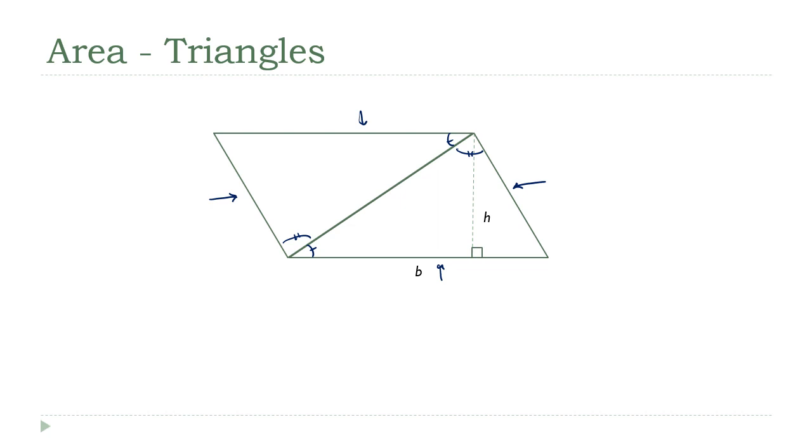We already know what the area of a parallelogram is: the base times the height. Because both of our triangles are the same, each one of them must be making up half of that parallelogram's area. So our formula for the area of a triangle is one-half the base times the height.